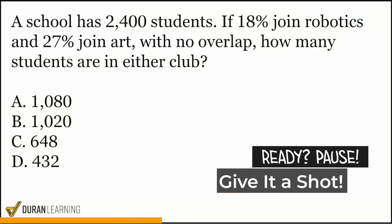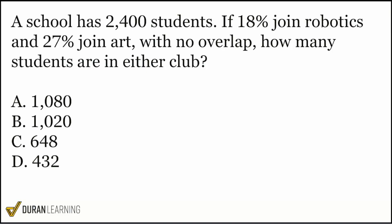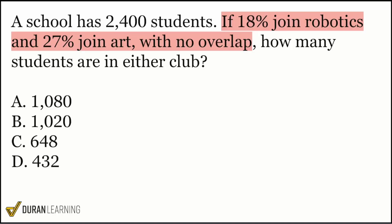We have another problem here to deal with, and we're going to tackle this in a very chill way. Number one, we're going to go ahead and read the question sentence first. The question sentence says: if this percentage joins robotics and this percentage joins art with no overlap, how many students are in either club? We're going to read that question sentence, but we're going to ignore all of that extra information. We're going to ignore that.